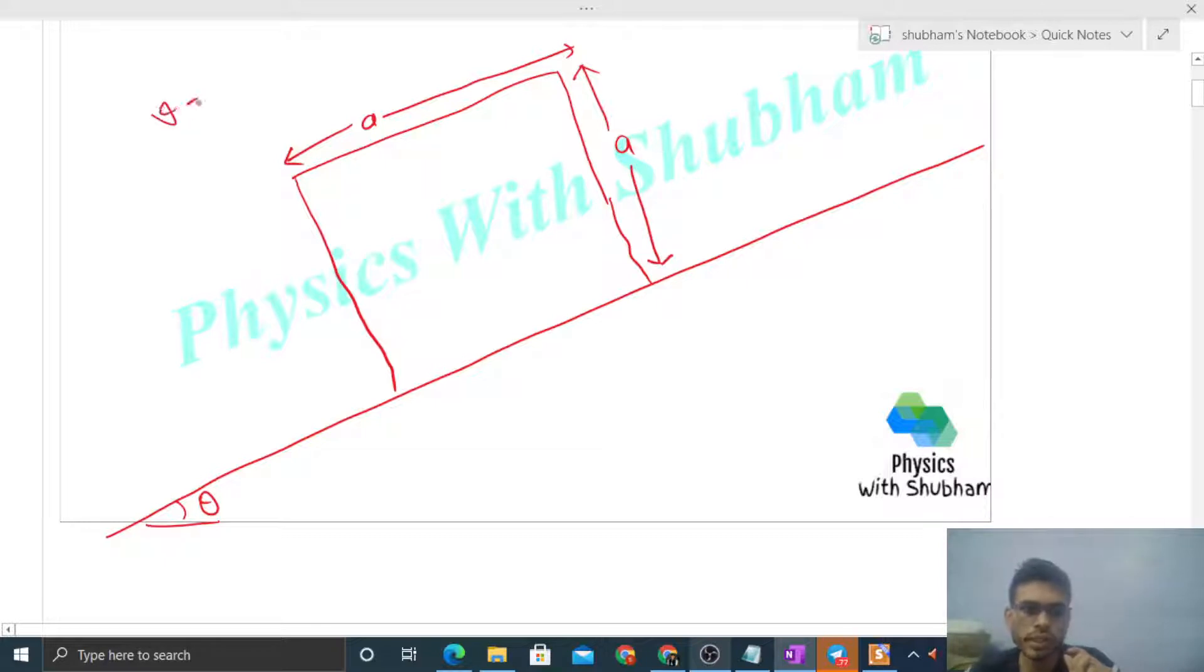Let's draw the free body diagram. mg acts vertically downward from the center of mass. We can take the components of mg directly: mg cos theta perpendicular to the inclined surface and mg sin theta parallel to the incline surface.